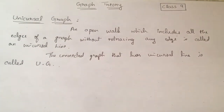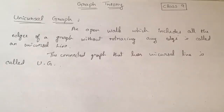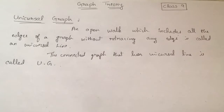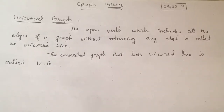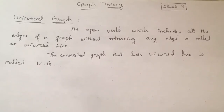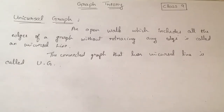Just to clarify the difference: in an Euler graph, we have an Euler line which is a closed walk containing all the edges of the graph with no edges repeated. For a Unicursal graph, it is the same thing but we have an open walk which includes all the edges of the graph without retracing any edge, which is a Unicursal line.